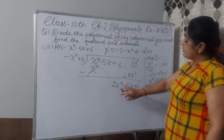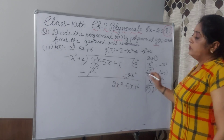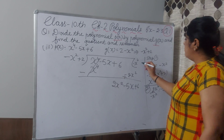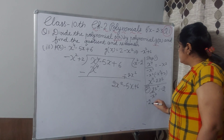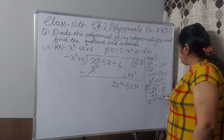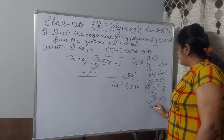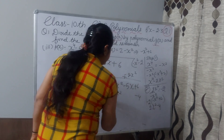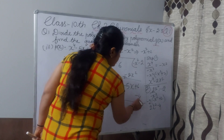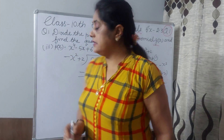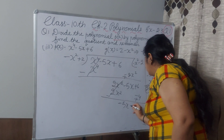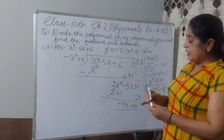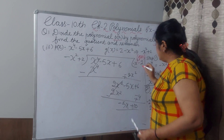Step 2: 2x² divided by minus x² gives minus 2. Write minus 2 in the quotient. Multiply minus 2 by the divisor minus x² plus 2: minus 2 times minus x² gives 2x², and minus 2 times 2 gives minus 4. Write 2x² and minus 4. Change the sign: 2x² becomes minus 2x², and minus 4 becomes positive 4. 2x² is cancelled. We are left with minus 5x plus 10. This cannot be further divided by x², so we leave it here. This is our quotient, and minus 5x plus 10 is our remainder.